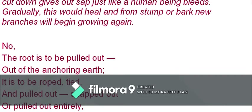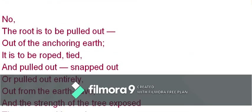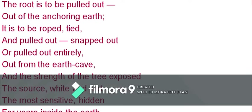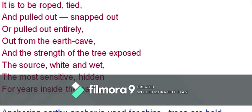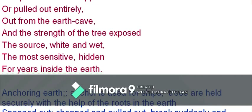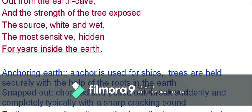The third stanza says: 'No, the root is to be pulled out of the anchoring earth. It is to be roped tight and pulled out — snapped out entirely from the earth cave — and the strength of the tree exposed: the source, white and wet, the most sensitive, hidden for years inside the earth.' A rope is tied and in olden times elephants were used to pull the stump out; today machinery is used.